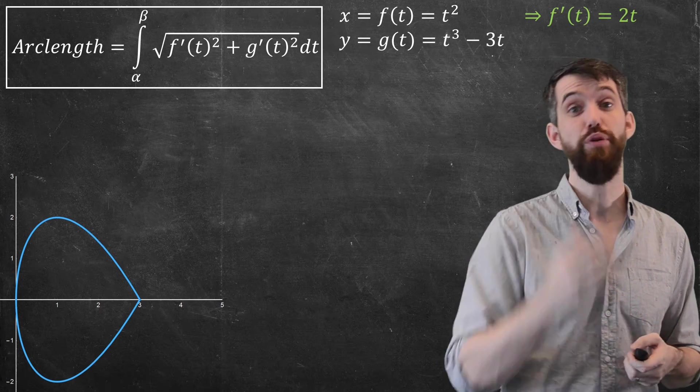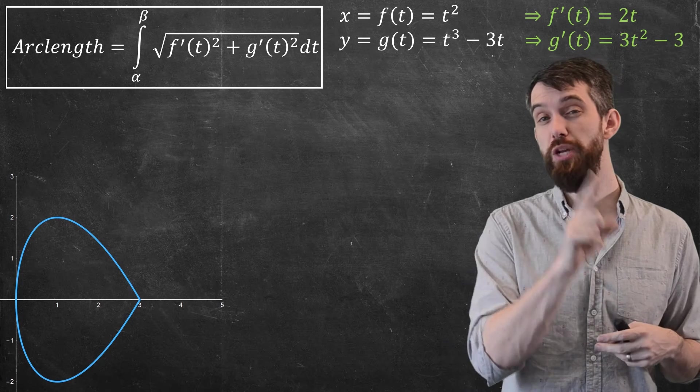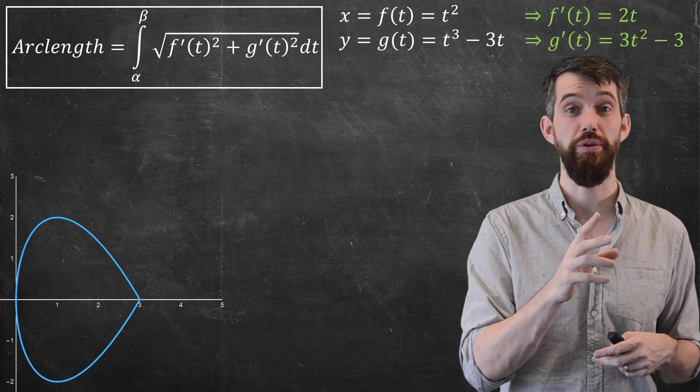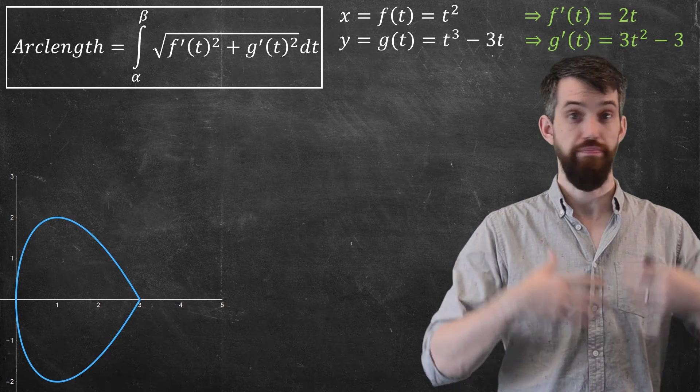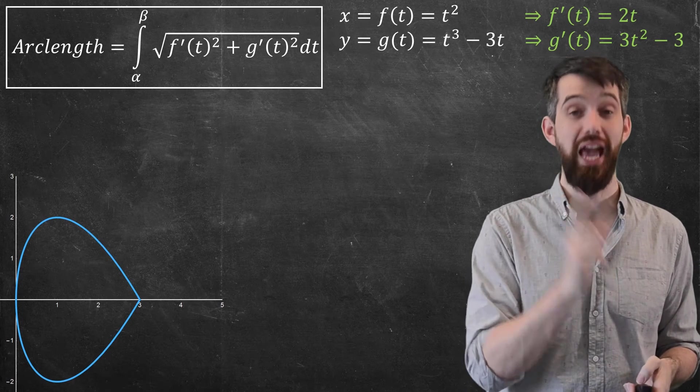Now I'm going to need both derivatives, so f prime is 2t, and I'll also compute out that g prime is going to be 3t squared minus 3. So there's my functions that I can put into my formula, but what about the endpoints, the alpha and the beta?